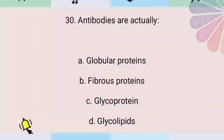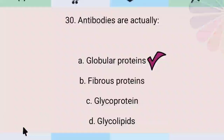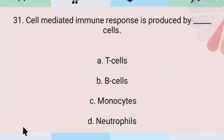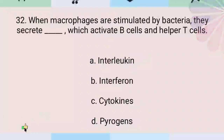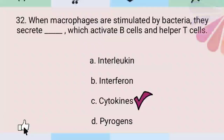Antibodies are actually globular proteins. Cell-mediated immune response is produced by T cells. When macrophages are stimulated by bacteria, they secrete cytokines, which activate B cells and helper T cells.